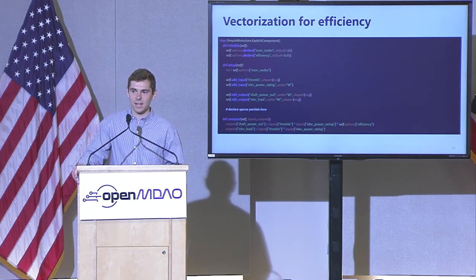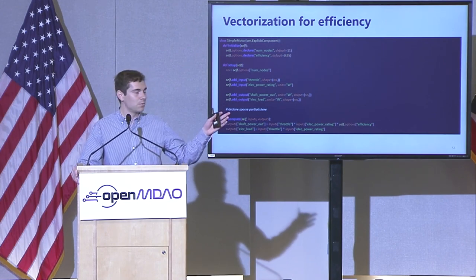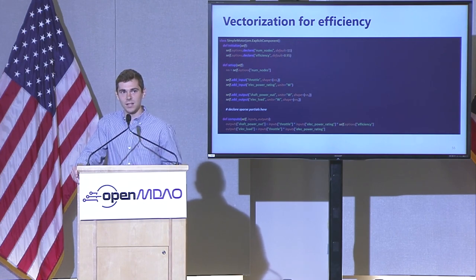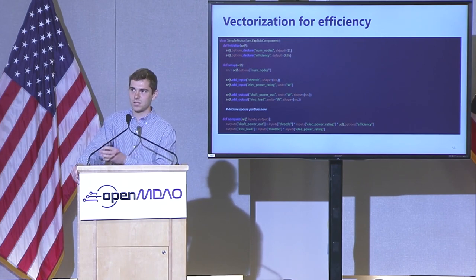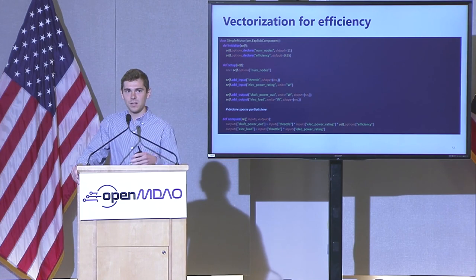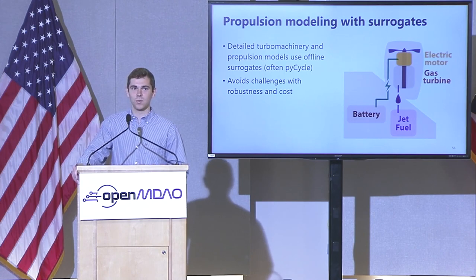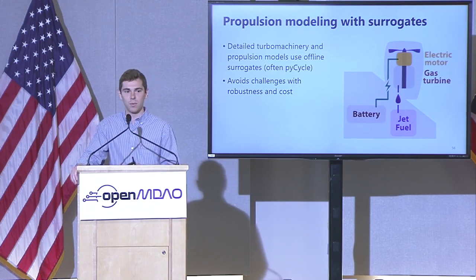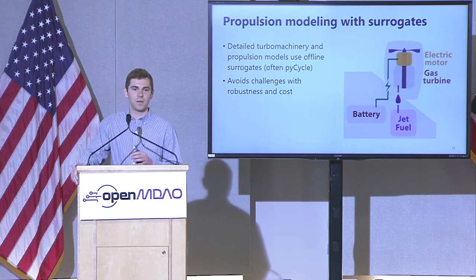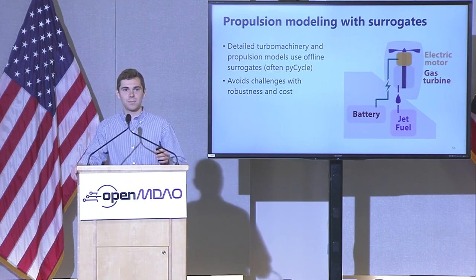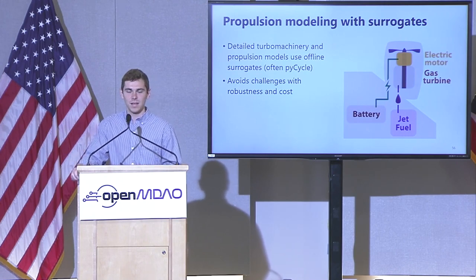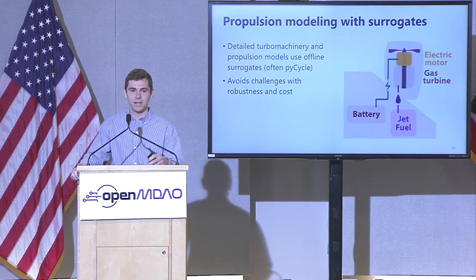Another big thing is using vectorization for efficiency. This is a simple motor component — the num_nodes option in the initialize function declares how many vector points are solved at once. The inputs and outputs — throttle and shaft power — all become vectors too, and we use sparse partials to avoid additional cost. Using surrogate models for propulsion has also been really effective — offline surrogate models of PyCycle get around problems with cost if it's not vectorized, and also improve robustness. We also have offline propulsion models for propeller efficiency maps, and I've developed online surrogate models for OpenAerostruct with simple planforms that will automatically retrain and rerun when variables change in the optimization.